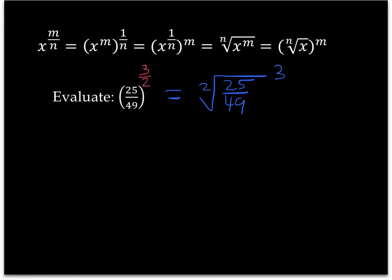Well, the square root of 25 is 5, and the square root of 49 is 7. So, now we have 5 over 7 cubed, which is 7 to the power of 3.